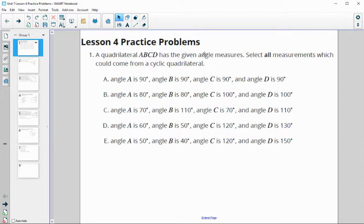This one says a quadrilateral has given angle measures. Select all measures that would come from a cyclic quadrilateral. Remember that cyclic means that the opposite angles, so the ones not next to each other, will add up to 180. So we're going to be looking at angle A and C to see if they total 180, and then also B and D to see if they total 180.